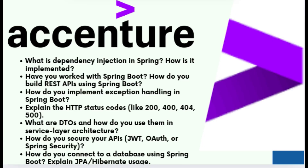You can also configure your application in the application.properties file. The next question was: how do you implement exception handling in Spring Boot? I explained @ControllerAdvice and @ExceptionHandler. @ControllerAdvice handles exceptions globally, while @ExceptionHandler handles a specific exception type. You can return a custom error response using standard fields like message and status.